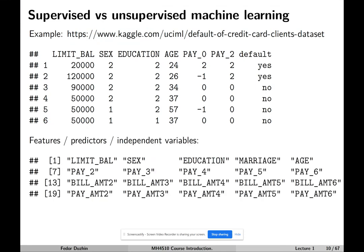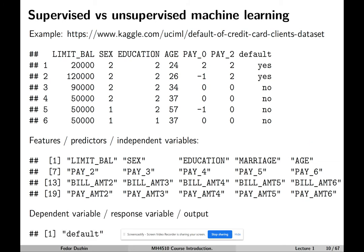The total number of features here is 23. Features, or predictors, or independent variables, are the information about the customer that we have. And we have the dependent variable, or the response variable, or simply the output — this is the variable that we are interested in predicting.